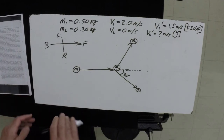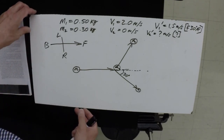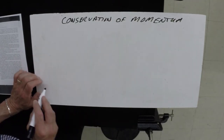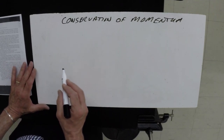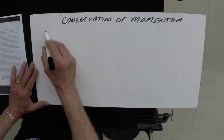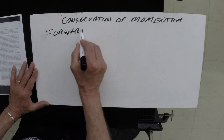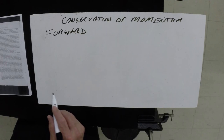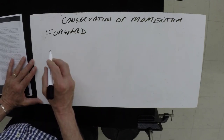This collision is similar to the experiment that we did in class. We now look at the components of momentum for each of the objects — momentum will be conserved for the forward components.